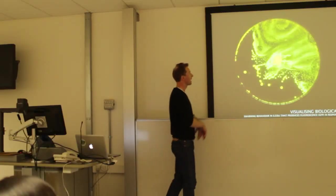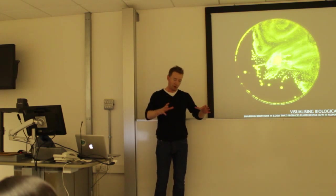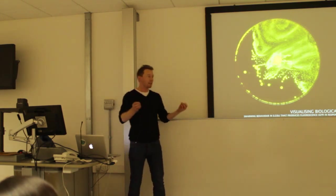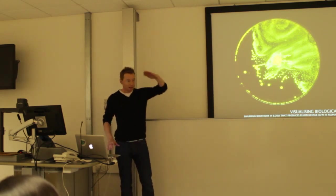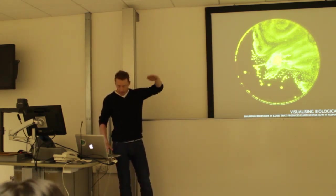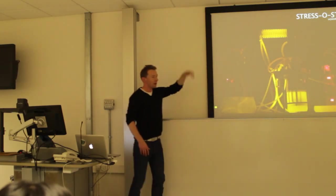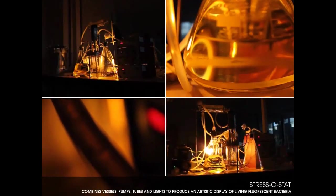One of the problems I had was I had no control over the system. What I wanted to build was a way — a system that could keep a steady population, where I could feed it a few parameters and get the light to fluctuate. So I built something I called a stressostat. It's like a window: when I feed it more or less light, it starts fluctuating with less light in the middle.